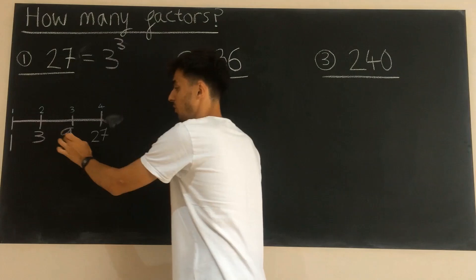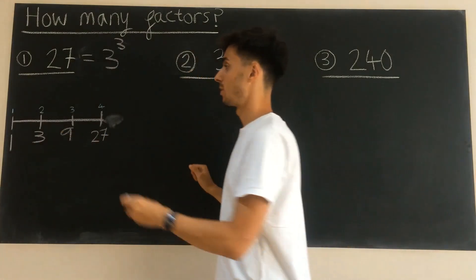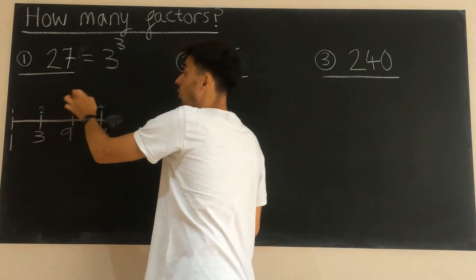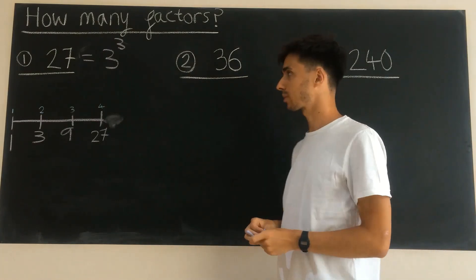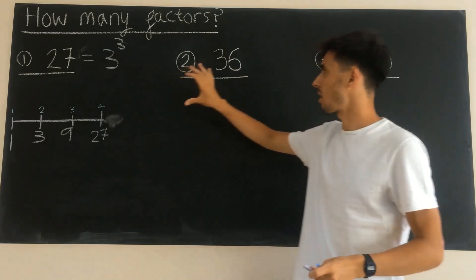So its factors we know are 1, 3, 9 and 27. But actually we could have got those just by counting up to the number of nodes on our number line. That's a really simple example.